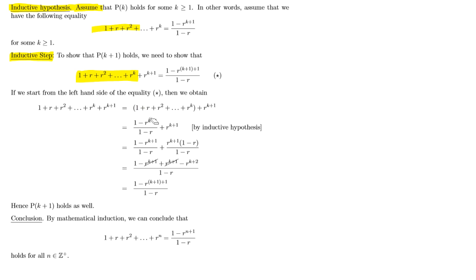From here we need some algebra. For the r to the k+1 term, we want a common denominator, so we multiply it top and bottom by (1−r). Now that both fractions share the denominator (1−r), we combine them over that common denominator. On the numerator we have 1 minus r to the k+1, plus r to the k+1, minus r times r to the k+1. The minus r to the k+1 and the positive r to the k+1 cancel out. Using index laws, r times r to the k+1 becomes r to the k+2.